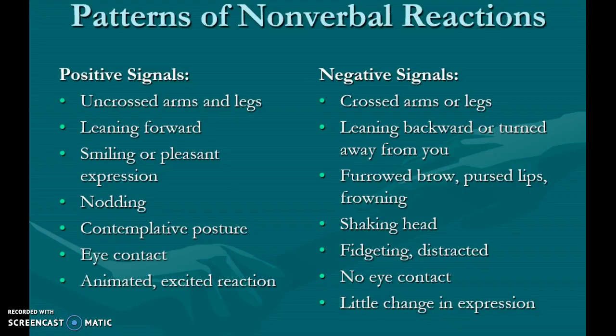Additional signals: negative — furrowed brow, pursed lips, frowning, shaking head. Positive — contemplative posture, eye contact, animated or excited reaction. Negative — no eye contact, fidgeting, distracted, little change in expression.